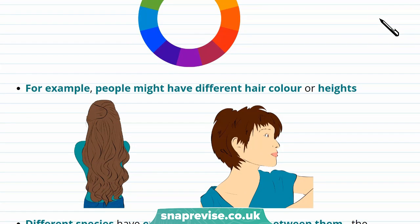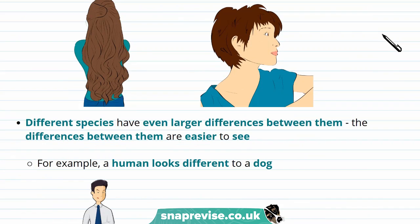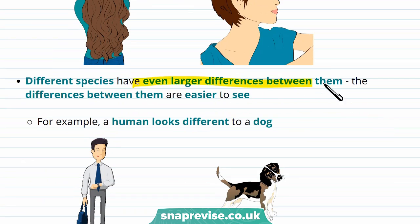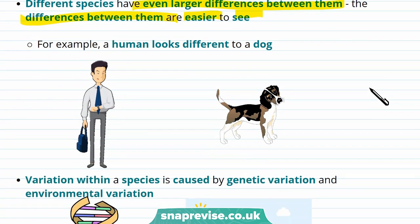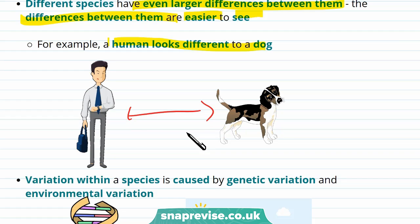For example, people might have different hair colours or heights. Different species have even larger differences between them, and the differences are easier to see. For example, a human looks a lot different to a dog — you'd immediately be able to tell the difference between a human and a dog, but it might be a bit harder to tell the difference between two humans that look similar.